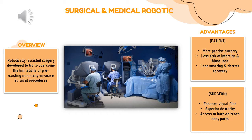Next is access to hard-to-reach body parts. Because of the enhanced flexibility and precision of the robot, it allows the surgeon to access hard-to-reach areas or deeper internal organs and parts. This means the surgeon can treat more conditions with the robotic surgery system.